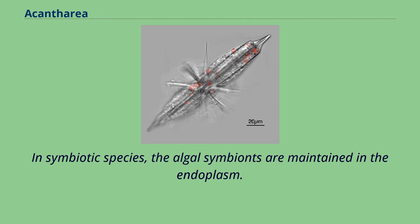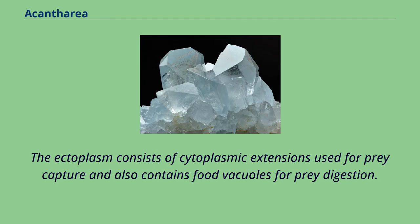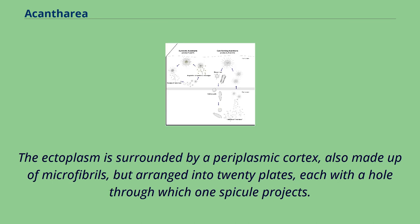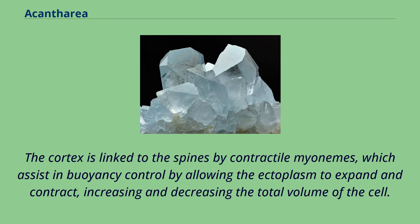The ectoplasm consists of cytoplasmic extensions used for prey capture and also contains food vacuoles for prey digestion. The ectoplasm is surrounded by a periplasmic cortex, also made up of microfibrils, but arranged into 20 plates, each with a hole through which one spicule projects. The cortex is linked to the spines by contractile myonemes, which assist in buoyancy control by allowing the ectoplasm to expand and contract, increasing and decreasing the total volume of the cell.